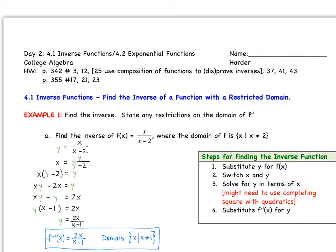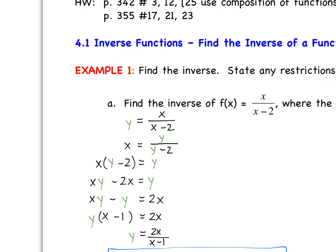Remember our rules: first, substitute y for f of x; switch x and y; solve for y in terms of x. Here we might need to do some extra stuff, and then our final step is to switch back. So if we're finding the inverse of f(x) = x/(x−2), our domain restriction is x cannot equal 2, because that would make our denominator zero. We'll come up and figure out what the domain of our inverse is.